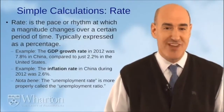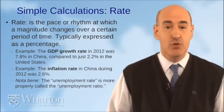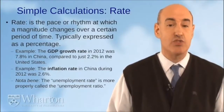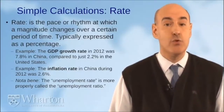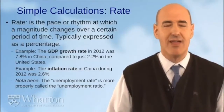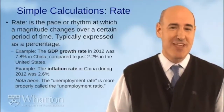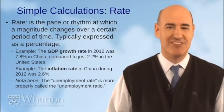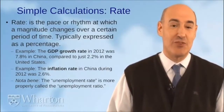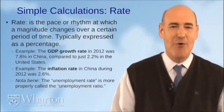Another example is the inflation rate, which measures how fast prices are changing. In 2012, the inflation rate in China was 2.6%, meaning prices were on average 2.6% higher at the end of that year. An important point: journalists misuse the word 'rate' when referring to unemployment, because the unemployment rate is actually not a correct usage — it should really be called the unemployment ratio.